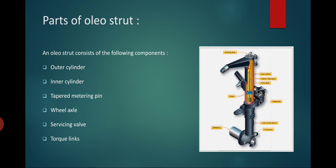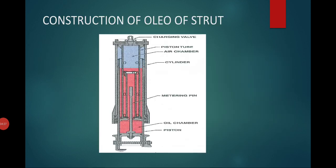The inner cylinder is also called a piston, forming a piston-cylinder arrangement. The tapered metering pin is used to control the flow rate of hydraulic fluid through the orifice. The servicing valve is used to fill hydraulic fluid into the oleo strut. Torque links are the connection between the piston-cylinder arrangement, the landing gear, and the aircraft structure.